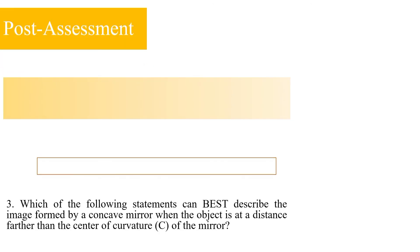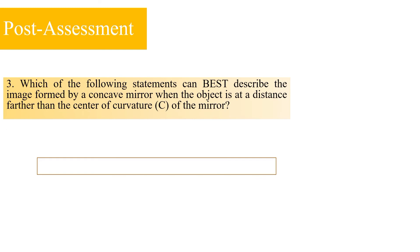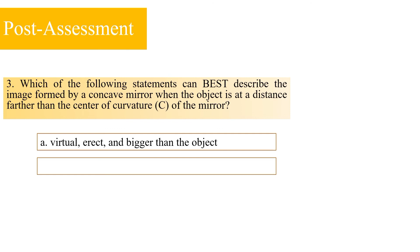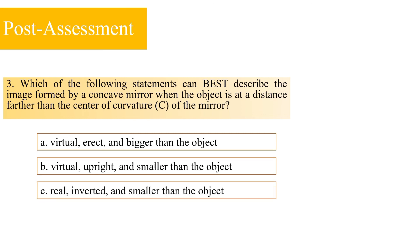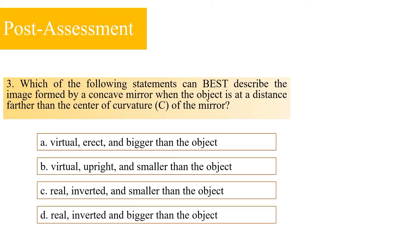Number 3: Which of the following statements can best describe the image formed by a concave mirror when the object is at a distance farther than the center of curvature? Is it A: virtual, erect, and bigger than the object? B: virtual, upright, and smaller than the object? C: real, inverted, and smaller than the object? Or D: real, inverted, and bigger than the object? The correct answer is letter C — real, inverted, and smaller than the object.